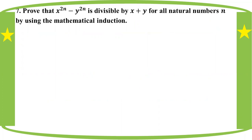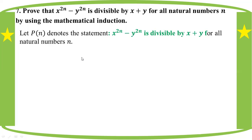Let's take a look at the statement: x to the power 2n minus 1 to the power 2n is divisible by x plus y. The first step is for all natural numbers n. For n equal to 1: x squared minus y squared.